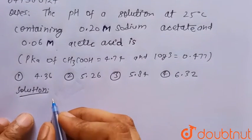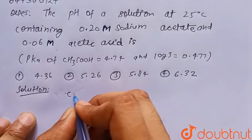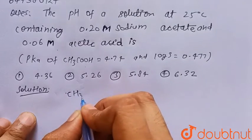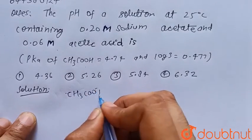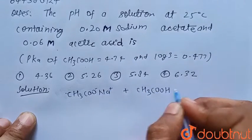Sodium acetate is CH3COO- Na+, and acetic acid is CH3COOH.